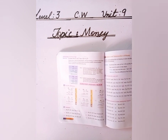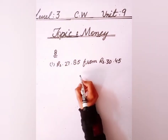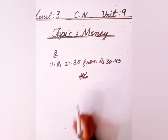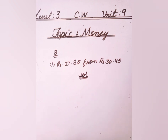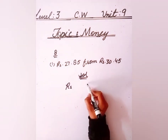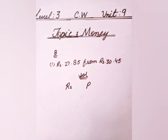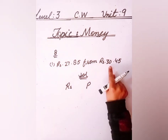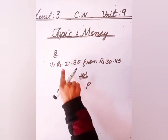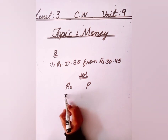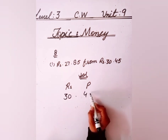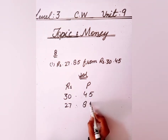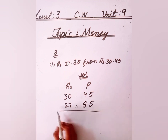Let's start with question number B, first part. I have written the question here. This is the solution. We start with rupees and paisas — we have to write the heading for rupees and paisas. The first value is the greater amount. The second value is 30 rupees and 45 paisas.